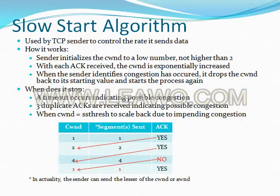The congestion window is then set to two, two segments are sent and an acknowledgement is received, then the congestion window is reset to four and four segments are sent. However, if an acknowledgement is not received, the congestion window drops back to one. The slow start algorithm stops when either a timeout occurs indicating possible congestion, three duplicate acknowledgements are received indicating possible congestion, or when the congestion window equals the slow start threshold — done to scale back due to impending congestion. The sender can only send the lesser of the congestion window or the advertised window.